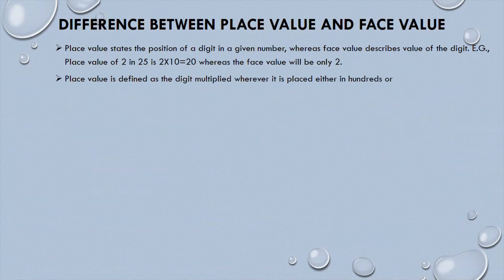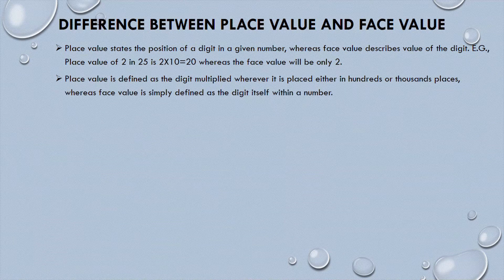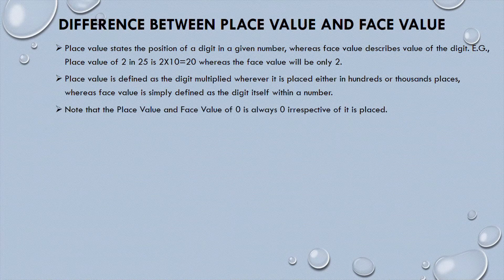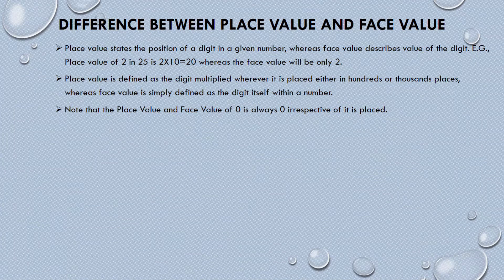Number two: place value is defined as the digit multiplied by wherever it is placed — whether in the hundreds or thousands place — whereas face value is simply defined as the digit itself within a number. Number three: the place value and face value of zero is always zero, irrespective of where it is placed.